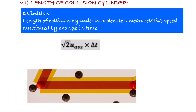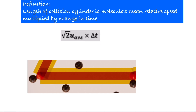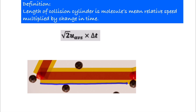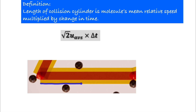The next parameter is the length of the collision cylinder. This is the distance traveled by the gas molecule between two successive collisions. One collision takes place here, another collision takes place here, and the distance between these two collisions is equal to the length of the collision cylinder.